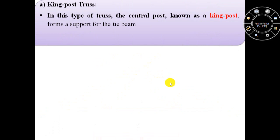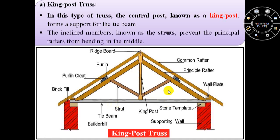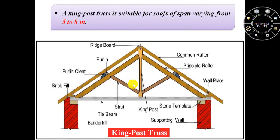In the king post truss, the central post known as king post forms a support for the tie beam. The inclined members, known as struts, prevent the principal rafters from bending in the middle. This king post truss is suitable for roofs of span varying from 5 to 8 meters.